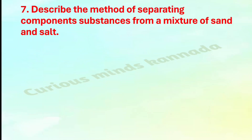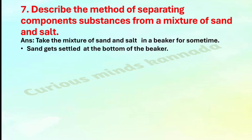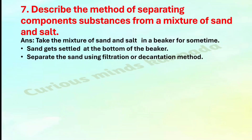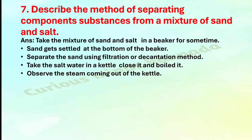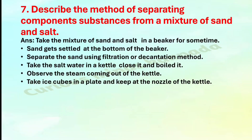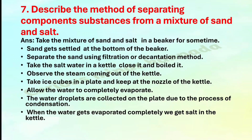Seventh: Describe the method of separating component substances from a mixture of sand and salt. Answer: Take the mixture of sand and salt in a beaker. Sand settles at the bottom. Separate the sand using filtration or decantation. Take the salt water in a kettle, close it, and boil it. Observe the steam coming out. Place ice cubes on a plate at the nozzle of the kettle and allow water droplets to collect on the plate through condensation. When the water evaporates completely, salt remains in the kettle.